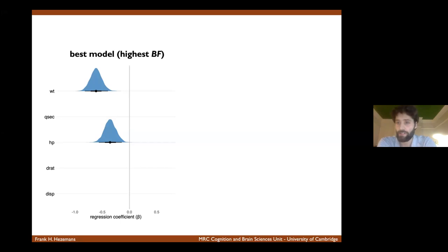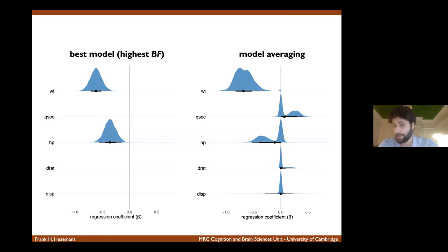Now, if we just looked at the parameter estimates for the best model, i.e. the one with the highest Bayes factor, we see a pretty clear story. So the car's weight and the car's horsepower are both strongly negative predictors of fuel economy, which makes a lot of sense. But if we use Bayesian model averaging, we see a different story, a bit more nuanced. So first of all, we are still happy that weight is a significantly negative predictor of the car's fuel economy.